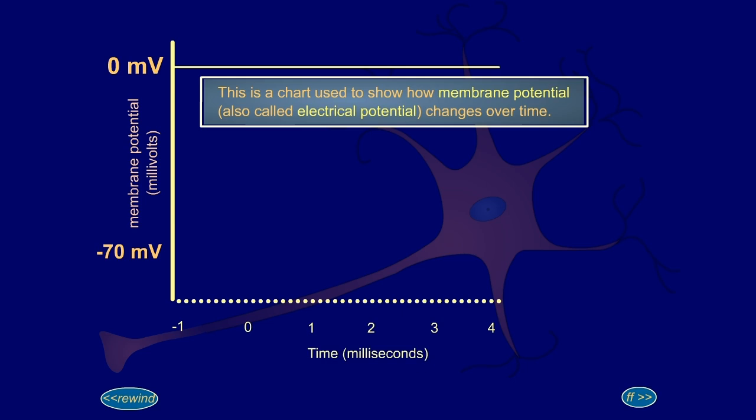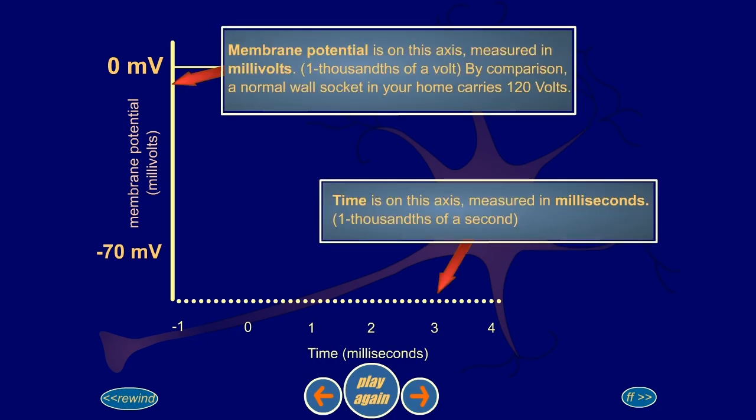This is a chart used to show how membrane potential, also called an electrical potential, changes over time. Membrane potential is on this axis, measured in millivolts, a thousandth of a volt. By comparison, a normal wall socket in your home carries 120 volts. Time is on this axis, measured in milliseconds, a thousandth of a second.